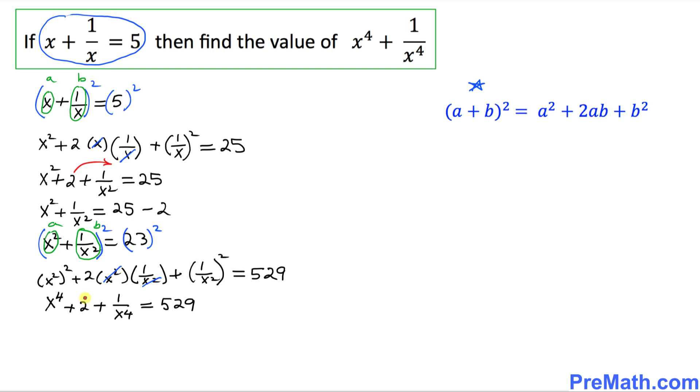Now the next step is we are going to drag this 2 on the other side. Once we drag this one on the other side, we end up with x to the power 4 plus 1 over x to the power 4 equals 529 minus 2. That means we are going to have x to the power 4 plus 1 over x to the power 4 equals 527.